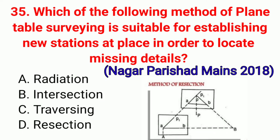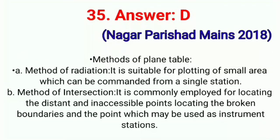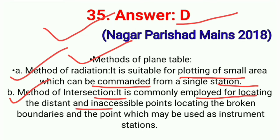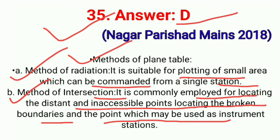Question No. 35. Which of the following methods of plane table surveying is suitable for establishing new points at places in order to locate missing details? This question is asked in exam Nagar Parichar 2018. Correct option D: Resection. Method of plane table: first, method of radiation — suitable for plotting of small area commanded from a single station; second, method of intersection — commonly employed for locating distant and inaccessible points, locating broken boundaries, and points used as instrument stations. Correct option D.